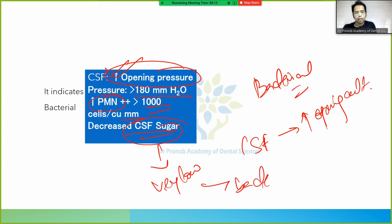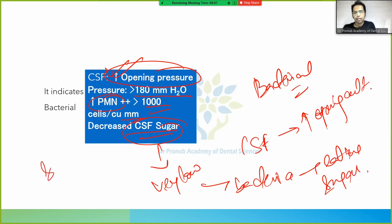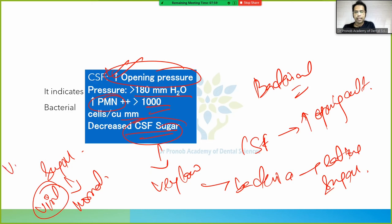The reason CSF sugar is low in bacterial meningitis is that bacteria consume the sugar. In viral meningitis, the sugar is normal because viruses cannot consume sugar. This is a key distinguishing feature between bacterial and viral meningitis.